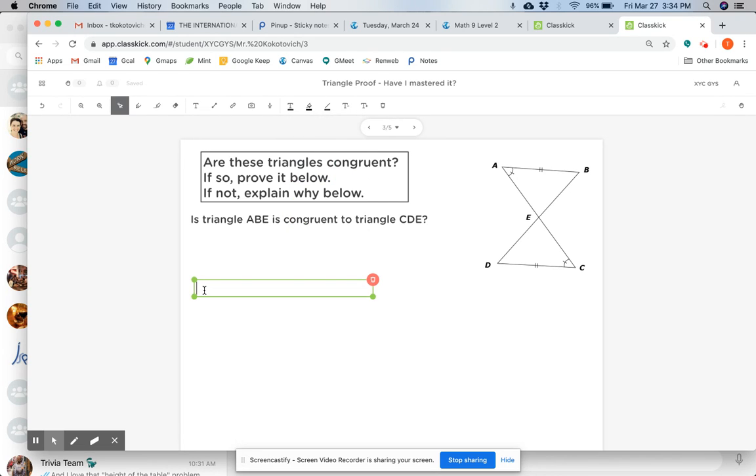So I'll add a border and say side AB is congruent to side CD. If I click off of it, that's going to be it. If I want to make it a different size, I can do this, and there we go.